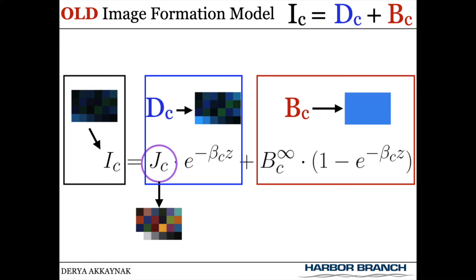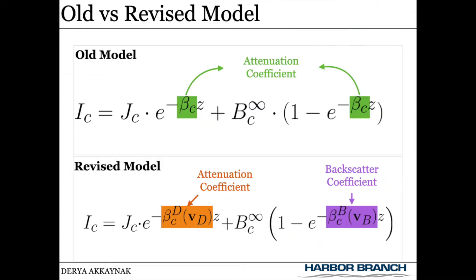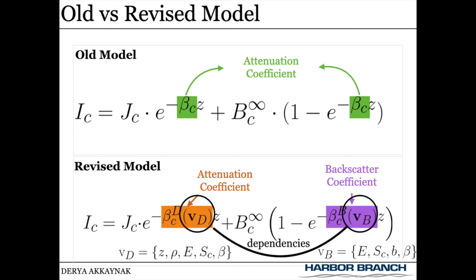What makes it old is not its form, but that the coefficient in both the direct signal and the backscattered signal is the same. In the revised model, they're different, and their dependencies on range, reflectance, ambient light, camera sensor, and water properties are explicitly shown.